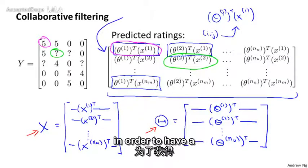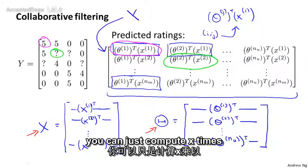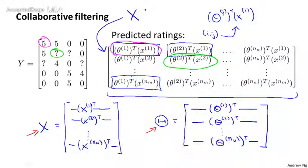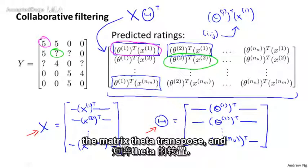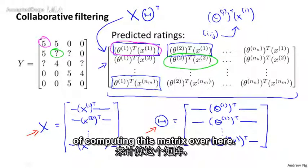Now, given this definition for the matrix x and this definition for the matrix theta, in order to have a vectorized way of computing the matrix of all the predictions, you can just compute x times the matrix theta transpose, and that gives you a vectorized way of computing this matrix over here.